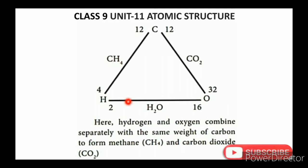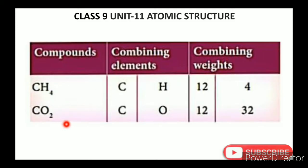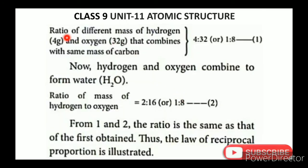For example, consider carbon, hydrogen and oxygen. In methane (CH4), 4 grams of hydrogen combine with 12 grams of carbon. In carbon dioxide (CO2), 32 grams of oxygen combine with 12 grams of carbon. So hydrogen and oxygen combine with the same mass of carbon in the ratio 4 to 32, which simplifies to 1 is to 8.